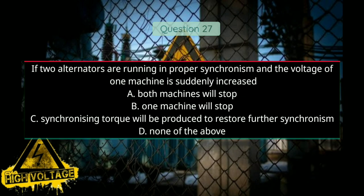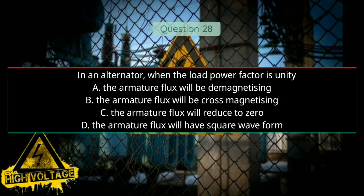Question number twenty-seven: If two alternators are running in proper synchronism and the voltage of one machine is suddenly increased — Option A: both machines will stop, Option B: one machine will stop, Option C: synchronizing torque will be produced to restore further synchronism, and Option D: none of the above. Answer will be C, synchronizing torque will be produced to restore further synchronism.